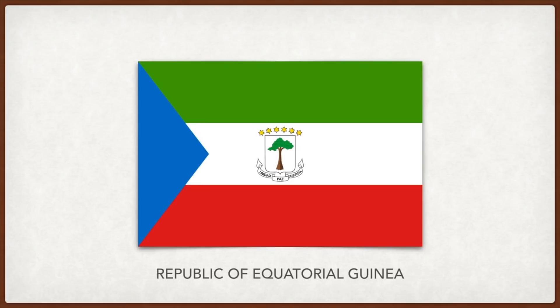The six golden stars represent the five main islands and the mainland territory. The blue triangle represents the ocean, the green vegetation, the white peace, and the red the blood shed by martyrs in the freedom struggle. East Timor: based on the flag used by the Revolutionary Front for an Independent East Timor. The black represents four centuries of colonial oppression, the yellow the struggle for independence, and red the suffering of East Timorese people, and the white star represents the hope of the future.